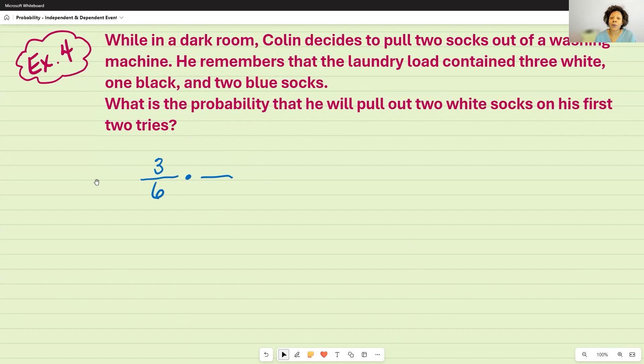So therefore, if he's already taken one of the socks out, he no longer has six. He now has five. If that sock that he took out was white, well, then he no longer has three white socks. He now has two white socks. So this was his first try. And this was his second try.